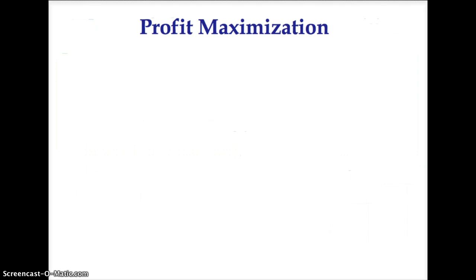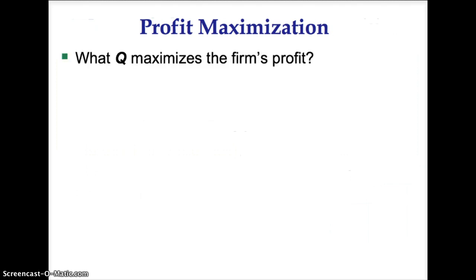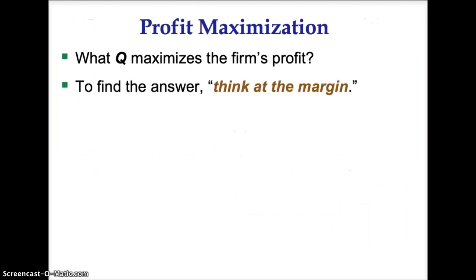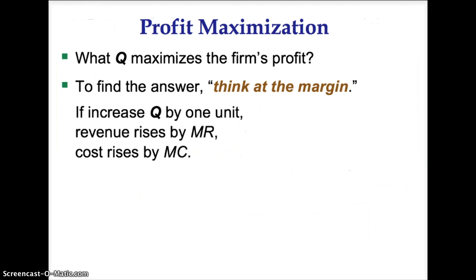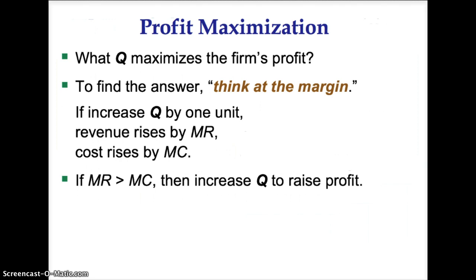The goal of any firm is to maximize profit. A competitive firm needs to determine the quantity that maximizes the firm's profit. To determine this quantity, we must think at the margin. If increasing quantity by one unit causes revenue to rise by marginal revenue, then costs rise by marginal cost. If marginal revenue is less than marginal cost, then the firm should increase quantity to raise profits.